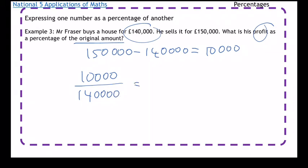So £10,000 over £140,000, then times by 100, gives you 7.14 percent.